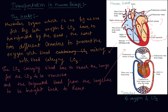The deoxygenated blood comes from the body to the upper chamber on the right — the right atrium. As the right atrium contracts, the right ventricle dilates, transferring blood to the right ventricle, which in turn pumps it to the lungs for oxygenation. So the right side carries deoxygenated blood to the lungs, and the left side carries oxygenated blood to the body.